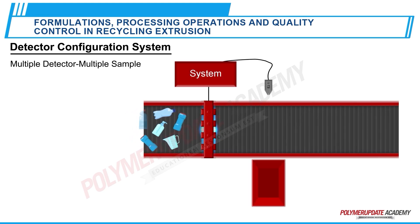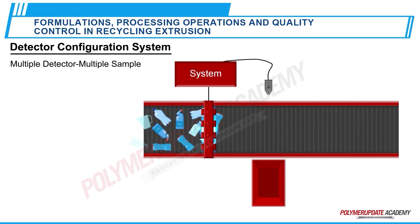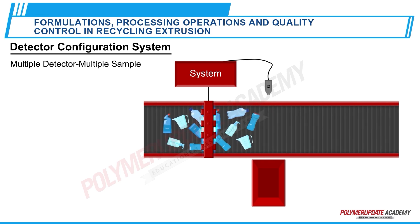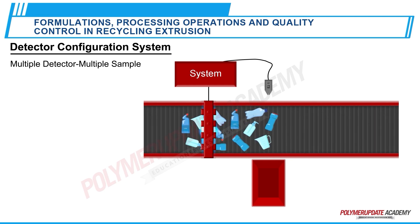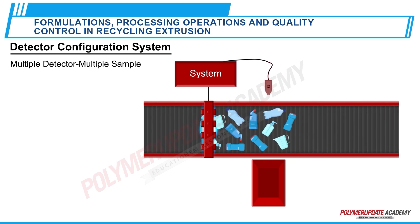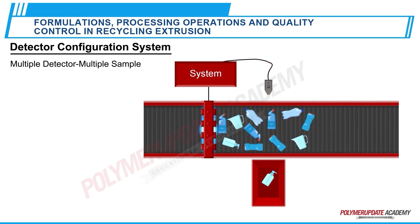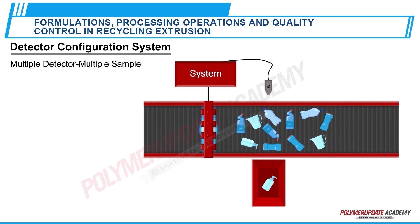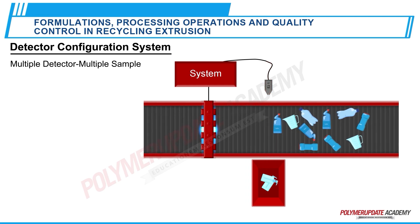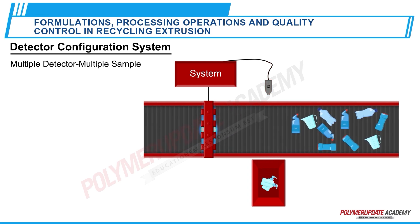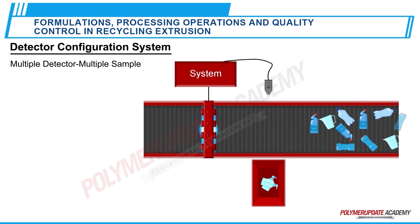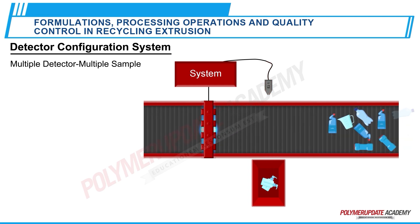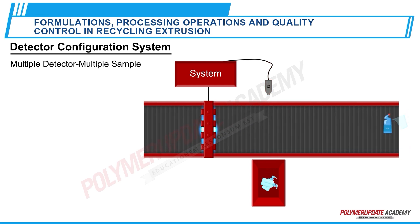The multiple detector multiple sample system is the standard configuration for a mass flow system and has detectors spaced to cover the width of the conveyor. When the target material is spotted, its position on the belt is noted and accordingly an ejector removes it before it falls off at the end of the belt.